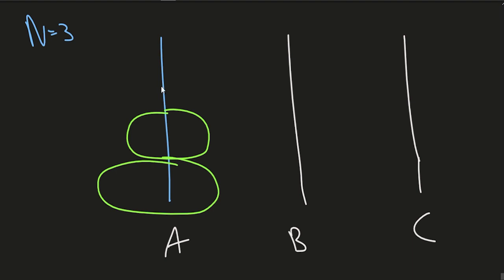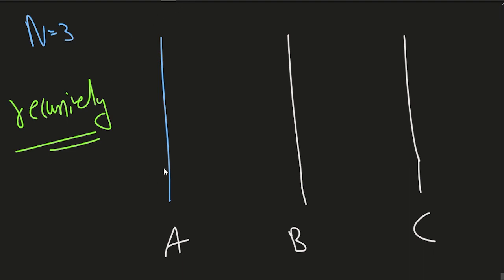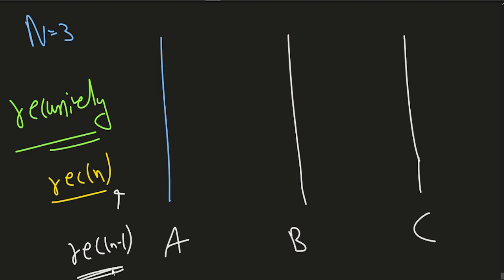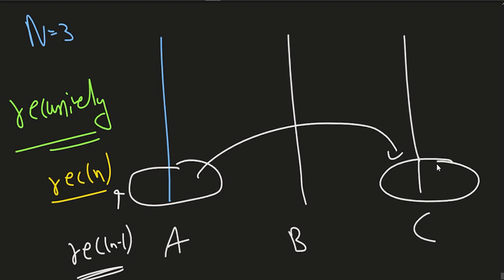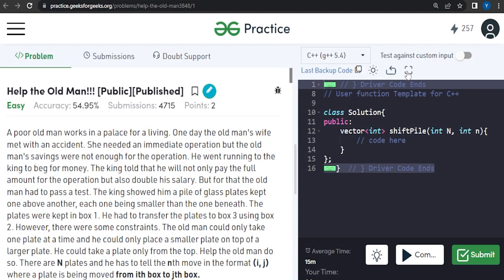You have to think recursively because you have to do the same thing again and again. If you are currently calling recursion for n, think that recursion till n-1 is already done — the transfer of n-1 discs is already done. You just have to move the nth disc. So first you call recursion for n-1 so that the remaining n-1 discs get placed, and then the nth disc can be placed.